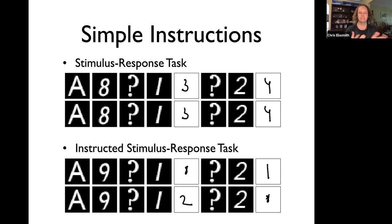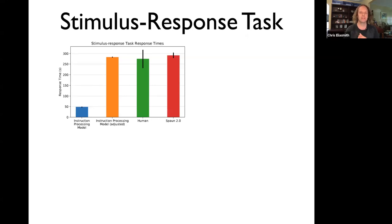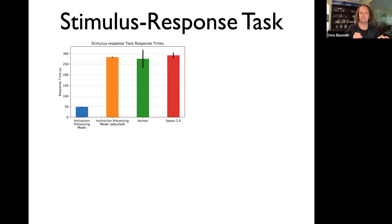The same comparison between simple and instructed instruction following has been done with people, so we can compare reaction times. The first graph shows what happens in the simple task. On the right-hand side is the SPAWN 2.0 model, in green is human performance — and we can see those are comparable. The blue on the left is the part of SPAWN important for determining the timing of instruction following, and the orange adds a constant to account for vision and motor control.